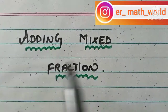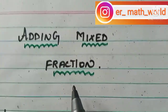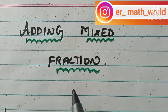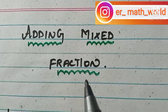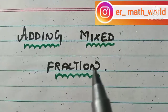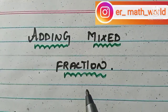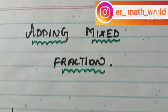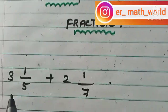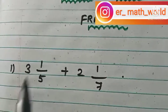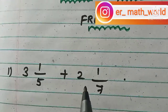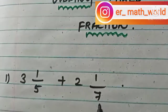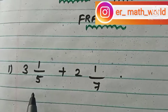This is the concept of adding mixed fractions. In this video we are going to learn how to add mixed fractions. The first example is 3 and 1/5 plus 2 and 1/7.